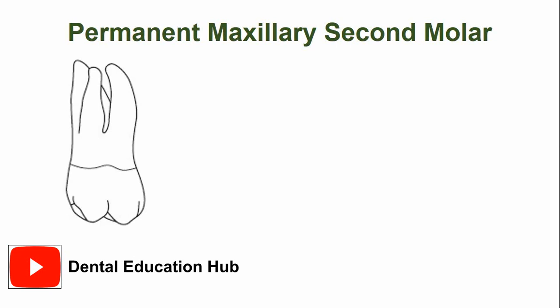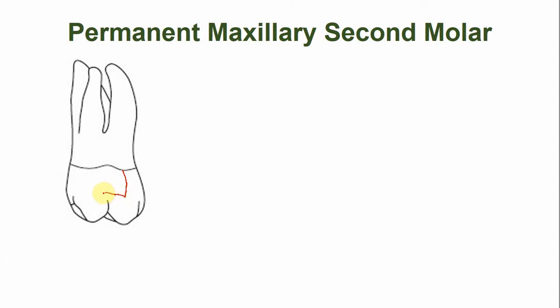This is the mesodistal outline of the permanent maxillary second molar. The pulp horns are well developed, especially the mesio-buccal pulp horn, which is more developed and prominent as compared to the disto-buccal pulp horn. This is the pulp canal in the mesio-buccal root.